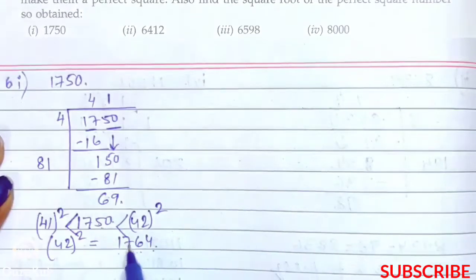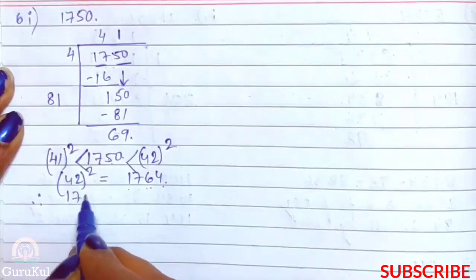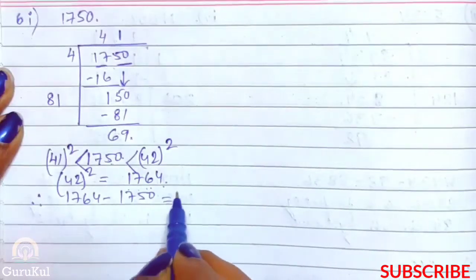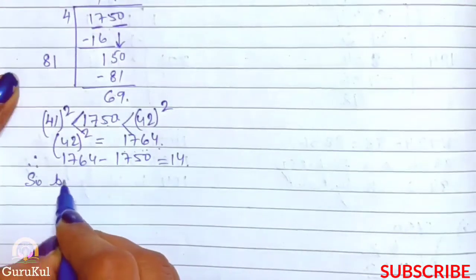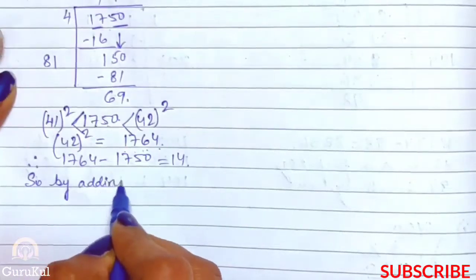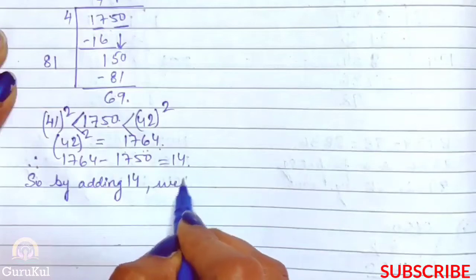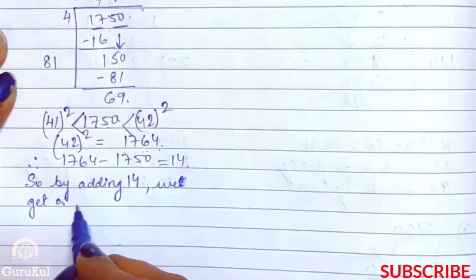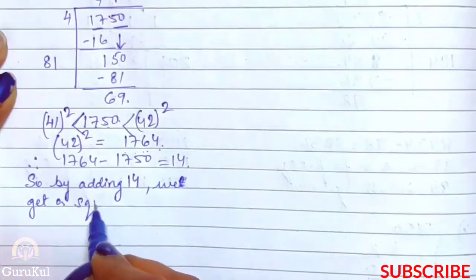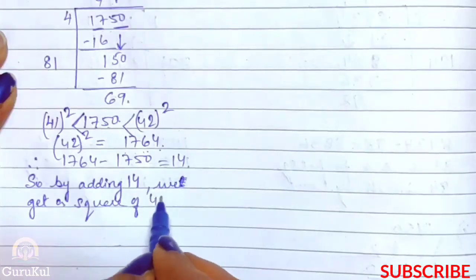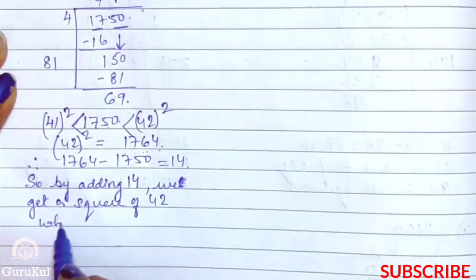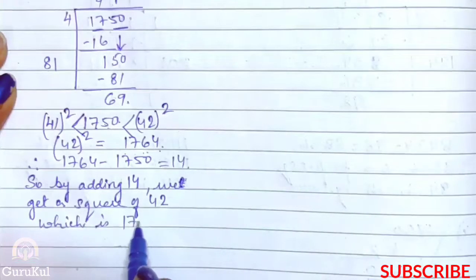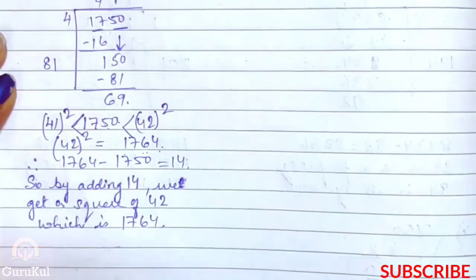1764, yaane ki 1750 me kya add kareenge ta ki 1764 ho aur hume ek perfect square mile. In that case we have to subtract them. Therefore 1764 minus 1750 is equal to 14. So by adding 14 we get a square of 42 which is 1764. So this is the answer.